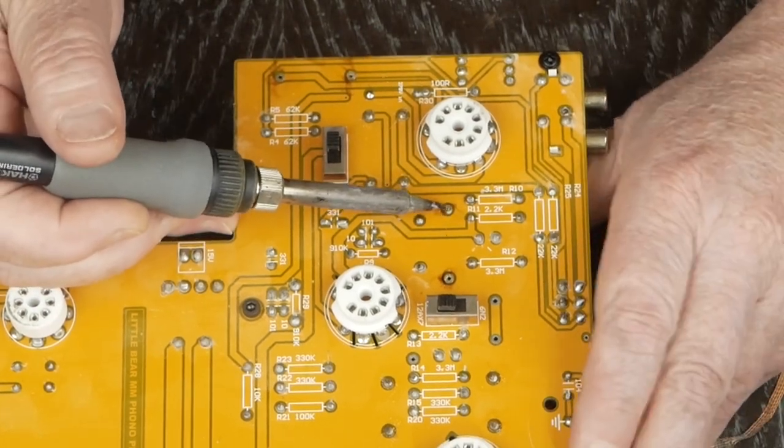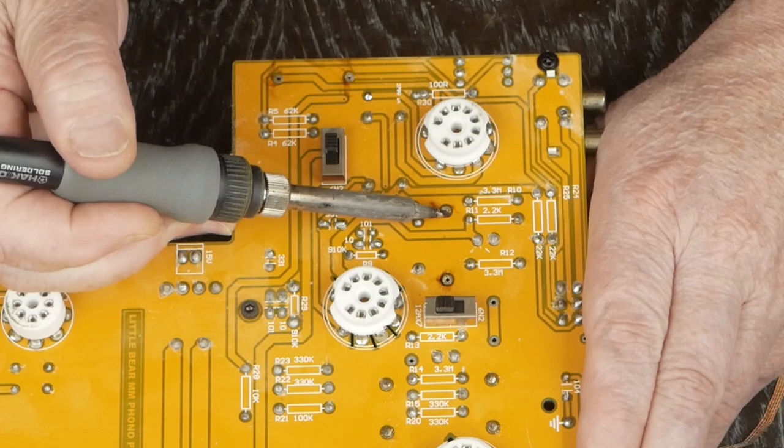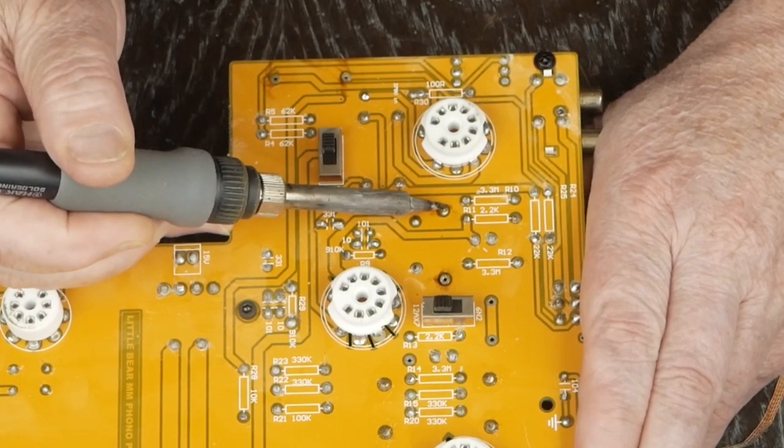Just make sure you have a coffee cup or something like that to put all the screws in while you're working on it so you don't lose any of the hardware. And these caps, being these big square ones, are actually pretty easy to desolder.